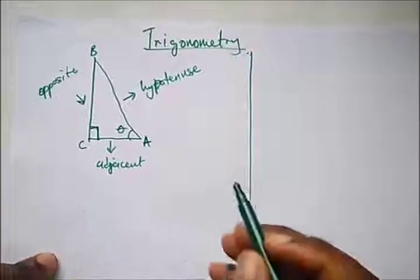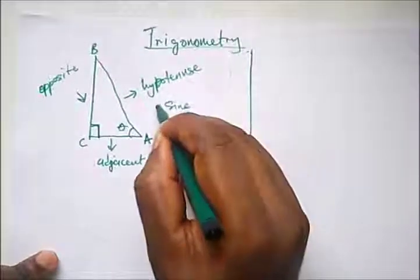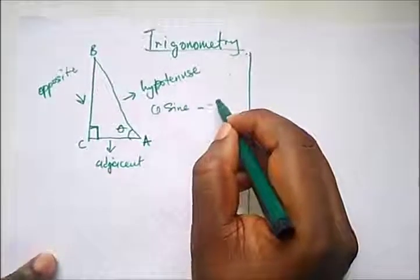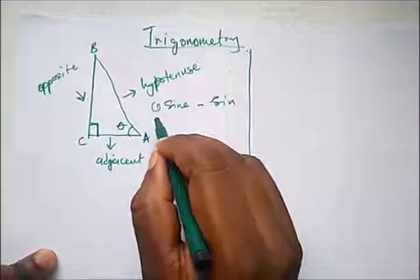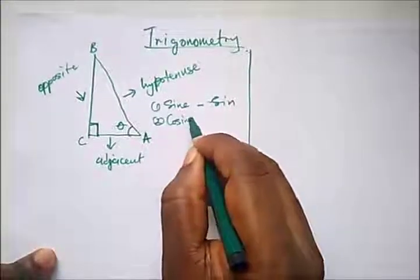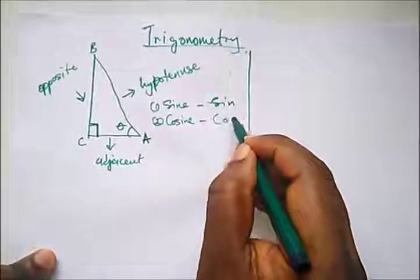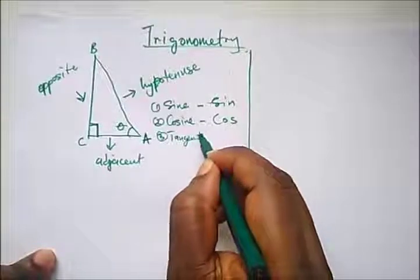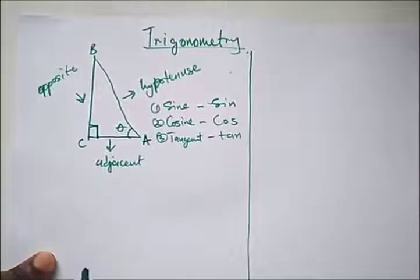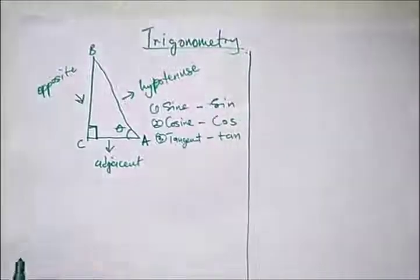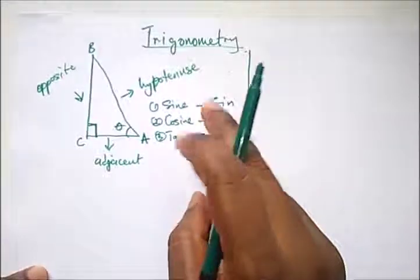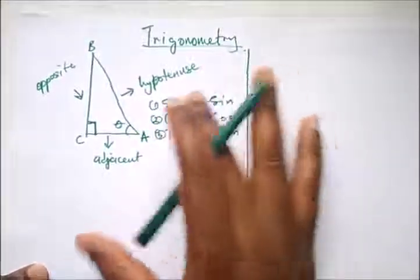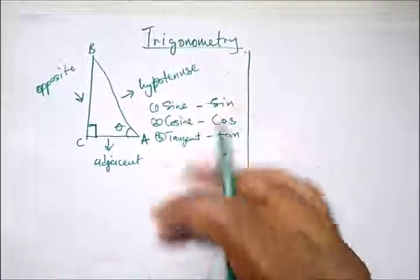There are three basic trigonometric ratios. The first is sine, which in short form we write as 'sin'. The second is cosine, which we write as 'cos'. The third is the tangent, which we write as 'tan'. These are the various trigonometric ratios in maths, and we are also going to see the inverse — the reciprocal — of these particular ratios.